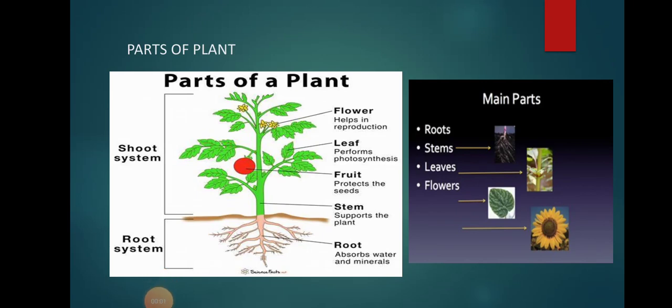Hello children, welcome back once again with a new topic: parts of a plant. A plant has two main parts, the root and the shoot. The part below the ground is called the root, and the part above the ground is called the shoot. It consists of stem, leaves, buds, flowers, and fruits.